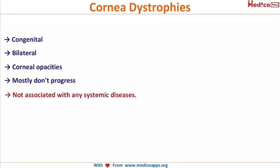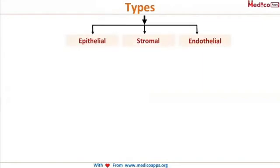Corneal dystrophies are congenital bilateral corneal opacities. Most of them do not progress, and none of them are associated with any systemic disease.